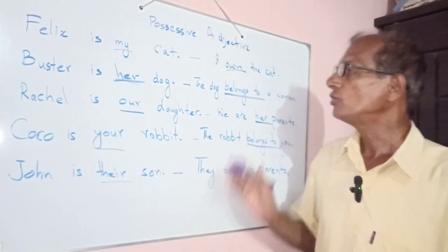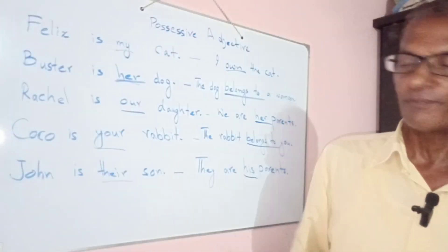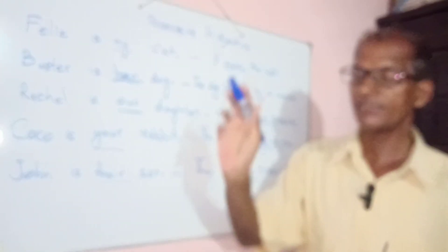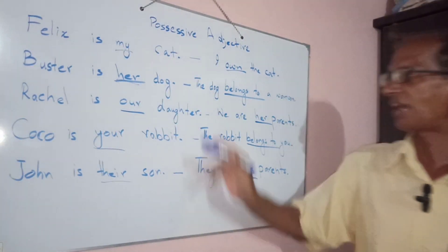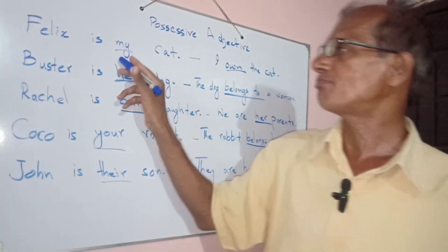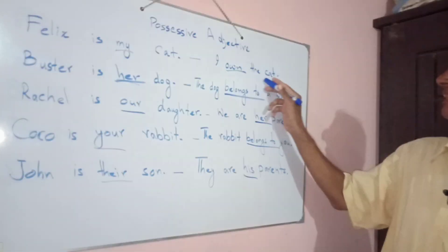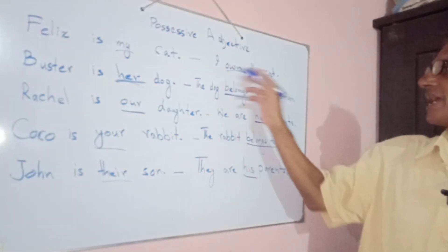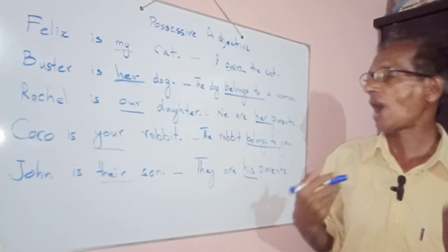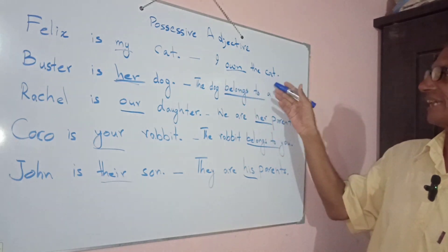Felix is my kid. Felix is my kid. So what is 'my'? Here 'my' is the possessive adjective. I own the kid — 'own' means I have possession, I am an owner. So I own the kid.